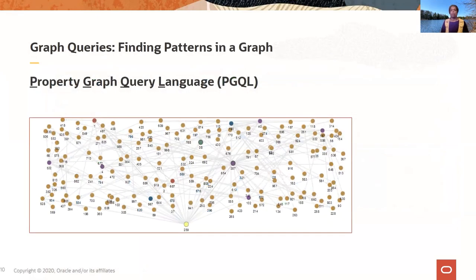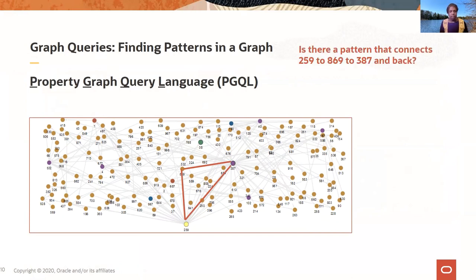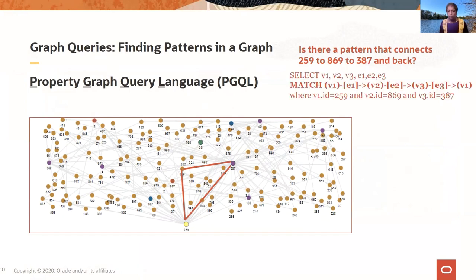Continuing with a recap on query — and we covered this extensively in the session last month — we have the Property Graph Query Language, which you can use to identify patterns that exist in your graph. For example, if you want to find out whether a certain pattern exists starting from node 259, you can specify that using a query, and you can see that it's similar to SQL in terms of having a SELECT clause, a WHERE clause, and so on. It has the additional MATCH clause that specifies the pattern — that's how you specify patterns in a graph.